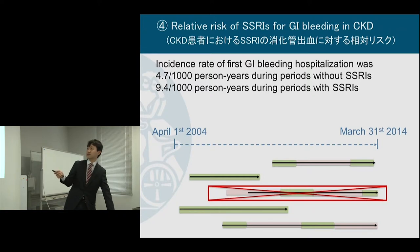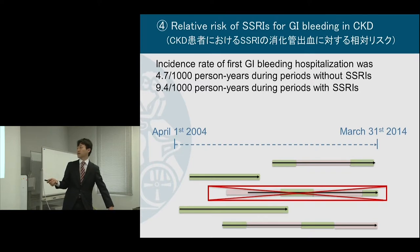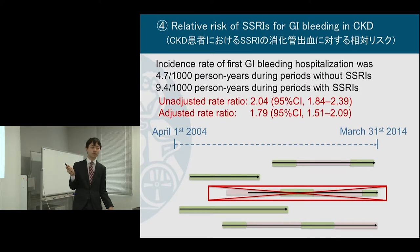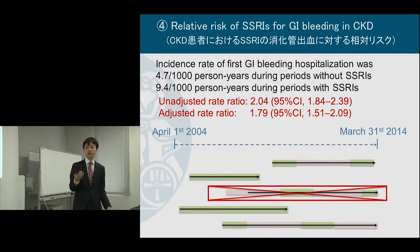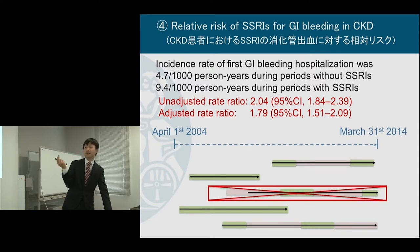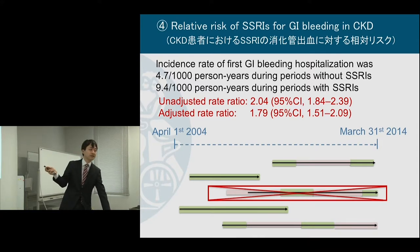The incidence rate of first GI bleeding was 4.7 during the green period and 9.4 during the pink period. Conducting survival analysis by Poisson regression — or Cox regression analysis could also be used — the crude rate ratio was 2.04. After adjusting for time-dependent confounding factors like NSAIDs use, warfarin, aspirin, or anti-acid drugs to protect the stomach, the adjusted rate ratio was 1.79. I interpret this as: during the period with SSRI, the relative risk of GI bleeding was 1.79.